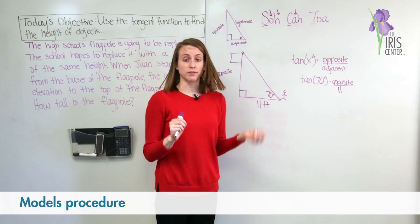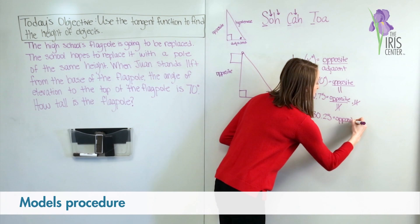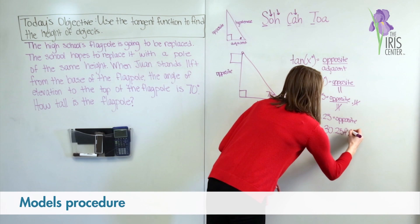Now that my equation is written, all I have to do is solve. That equals 30.25. So I know the length of the side opposite to my target angle, which is also the height of the flagpole, is 30.25 feet.